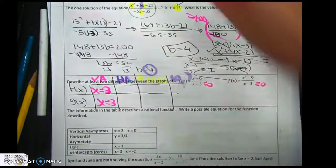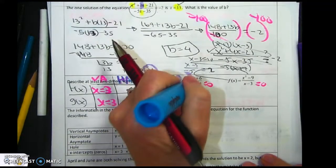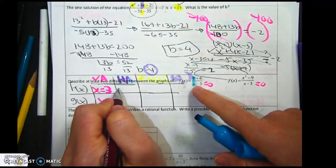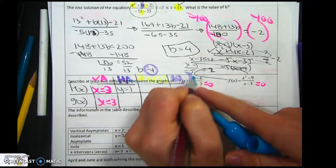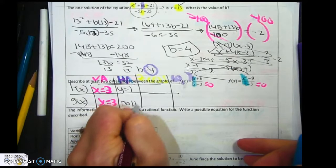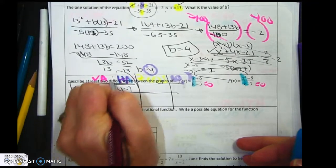My H-A is based on the leading coefficient. So this, in this case, f of x is y equals 1 because they're the same, 1 divided by 1. In this case, this one's bigger, so there is no H-A. Okay, that's one difference right there.